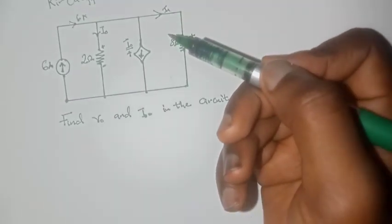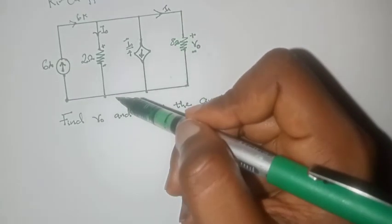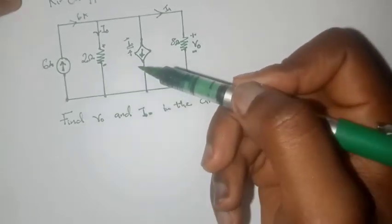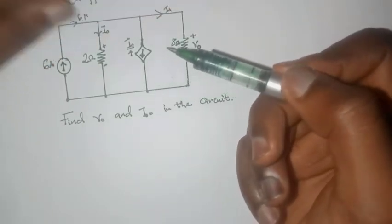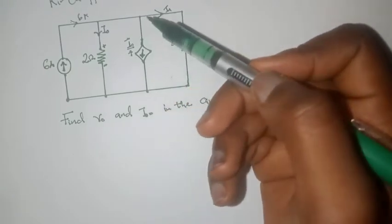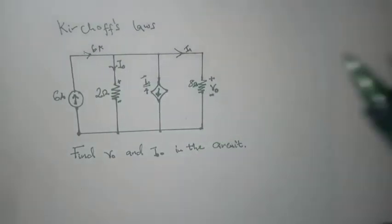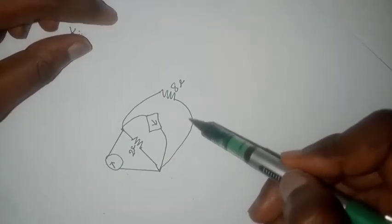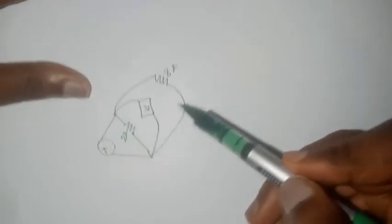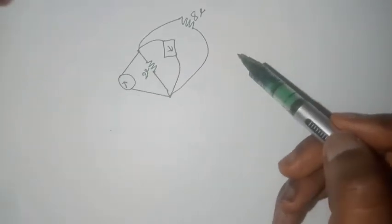The first thing we can write here is Kirchhoff's current law. One thing you'll notice is that this whole line is a single node. Because you can simply redraw this circuit like this as a single node, and it will still not have changed the properties of the circuit.